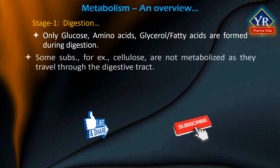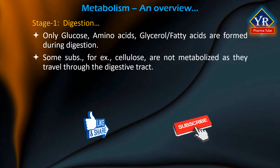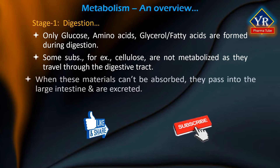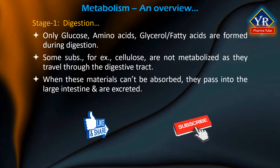Some substances such as cellulose are not metabolized as they travel through the digestive tract. When these materials can't be absorbed, they pass into the large intestines and are excreted from the body.